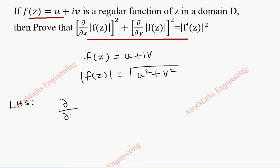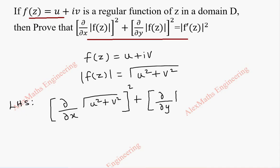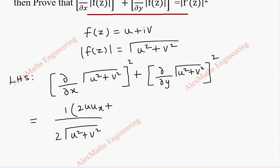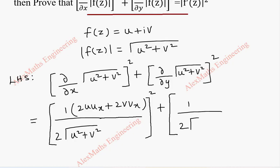we have: partial by partial x of root of (u squared plus v squared), whole squared, plus partial by partial y of root of (u squared plus v squared), whole squared. Now this derivative with respect to x will be 1 by 2 root of (u squared plus v squared), and u squared derivative is 2u·ux plus v squared derivative is 2v·vx. The first part is the partial derivative with respect to x, whole squared. In the same way, the second part is the partial derivative with respect to y: